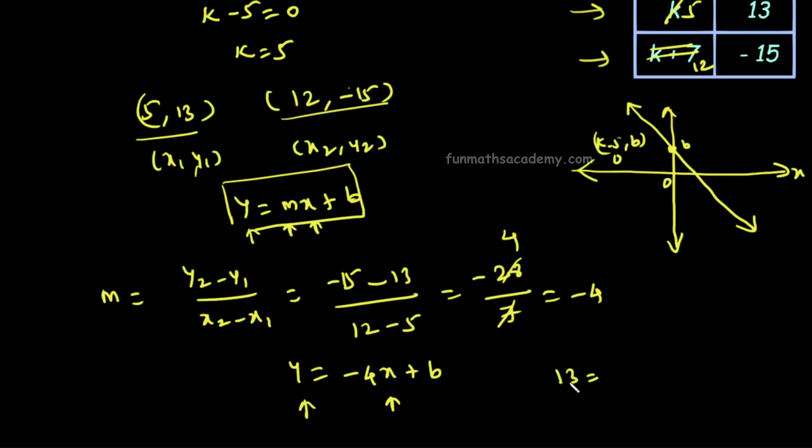13, the y value, equals minus 4 times the x value which is 5, plus b.